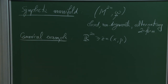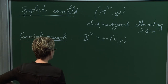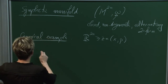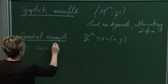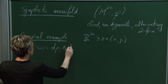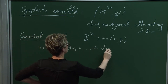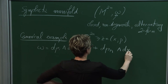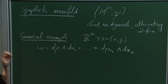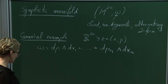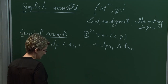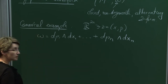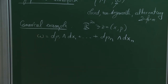For example, if n is 4, it could be one particle in R^4, two particles in R^2, or four particles in R. The canonical symplectic form is dp_1 ∧ dx_1 + ... + dp_n ∧ dx_n. It's clearly a 2-form which is closed, non-degenerate, and anti-symmetric.